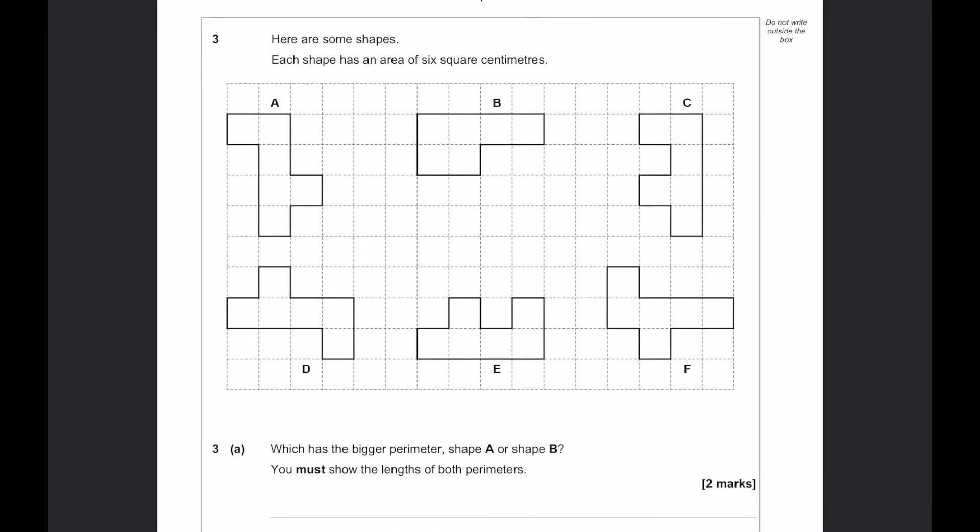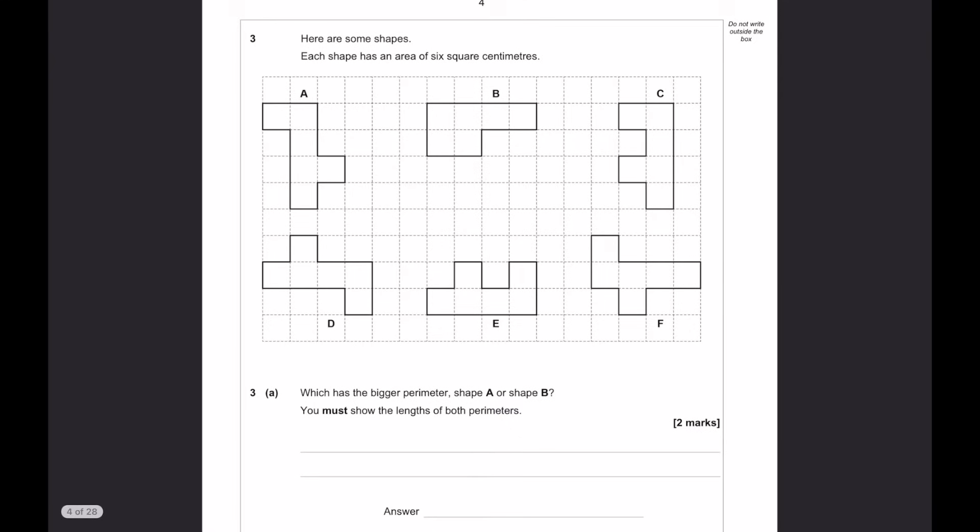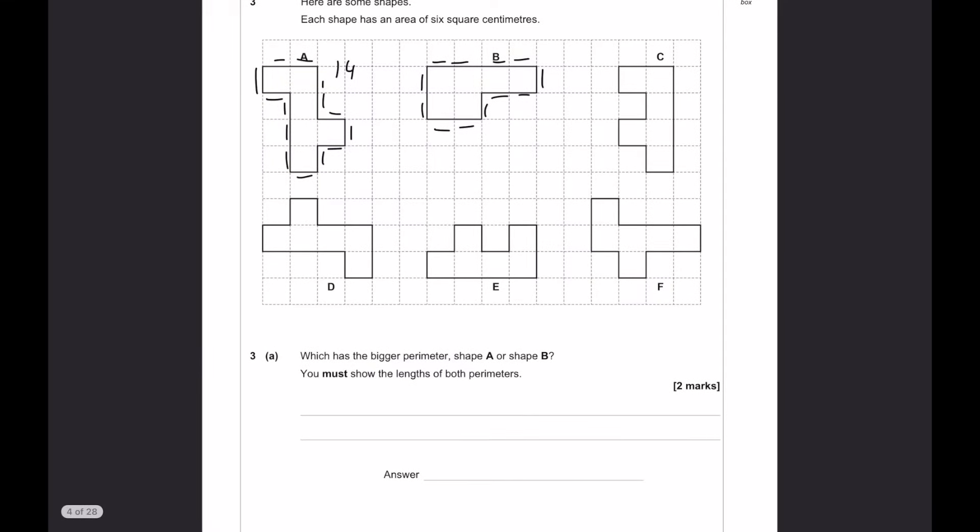Each shape has an area of 6 square centimetres. Which has the biggest perimeter, a or b? So, we have 1, 2, 3, 4, 5, 6, 7, 8, 9, 10, 11, 12. So, a, 14b, 12, so it's a.